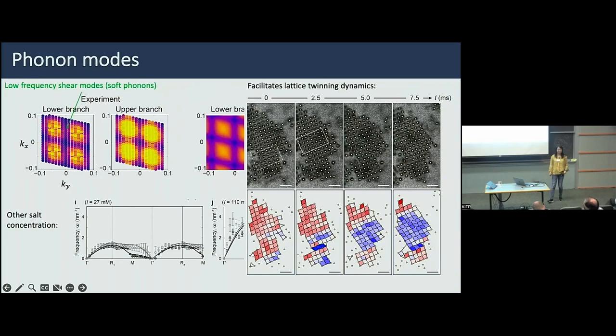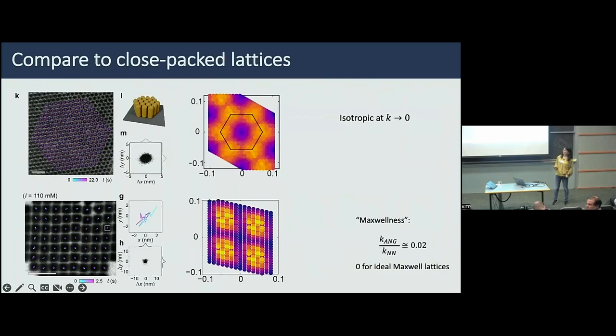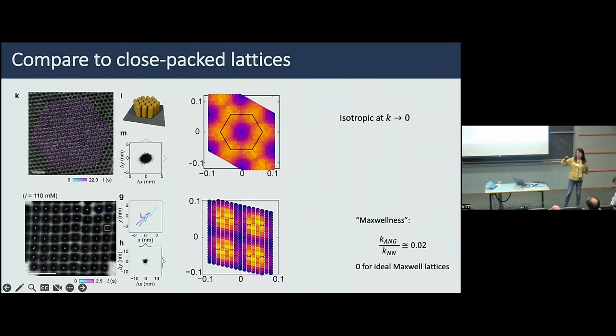Question: Are you able experimentally to tune the 'Maxwellness' — to systematically increase the angular interactions so you can see the soft modes become less soft? Response: Yes, I think that is possible. The angular interactions here come from next-nearest-neighbor interactions. If you tune the range of the interaction — which can be achieved by changing ionic strength or other means — you can definitely change this.